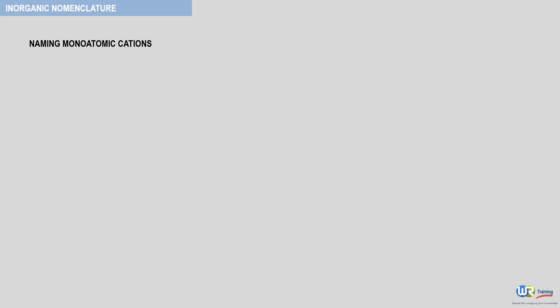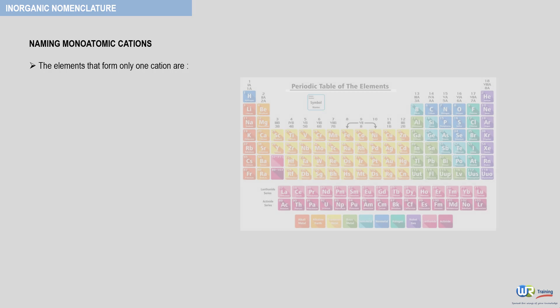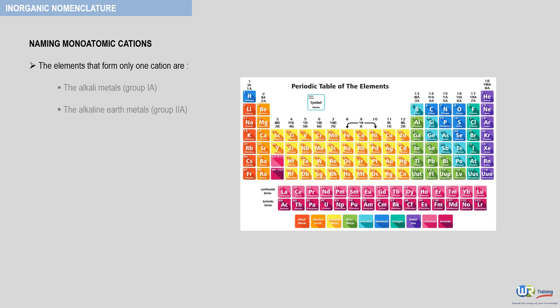The elements that form only one cation are the alkali metals group 1A in the periodic table and the alkaline earth metals group 2A. Also, zinc, cadmium, aluminum, and most often silver.